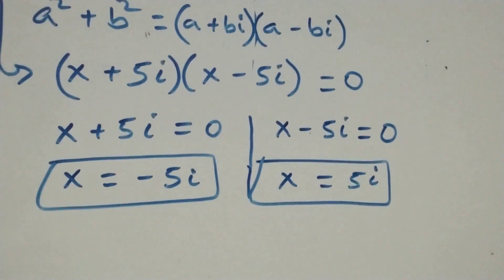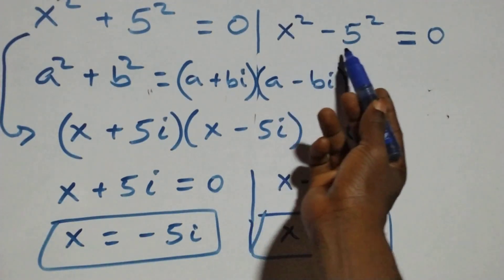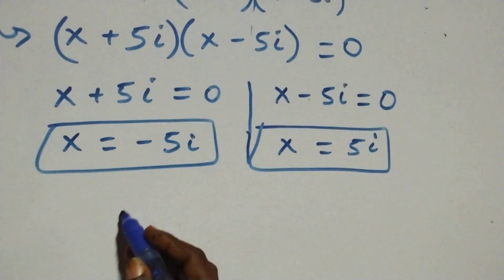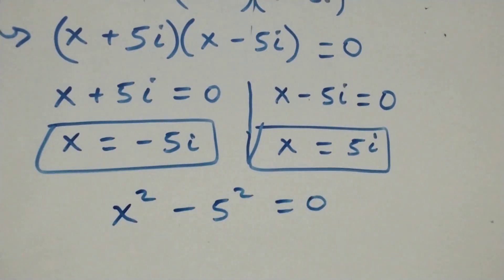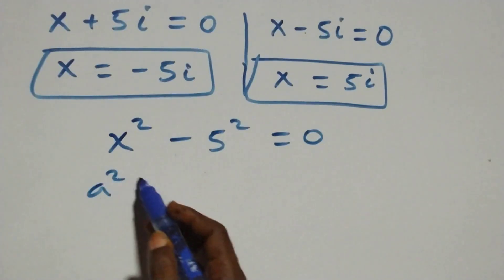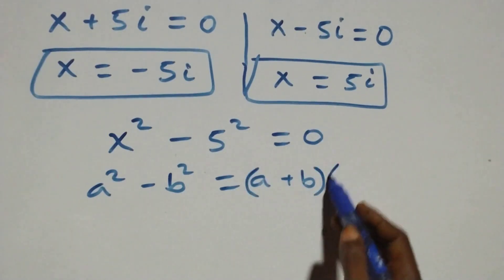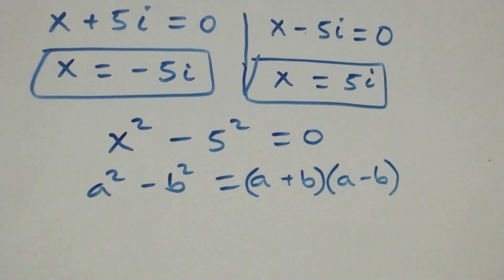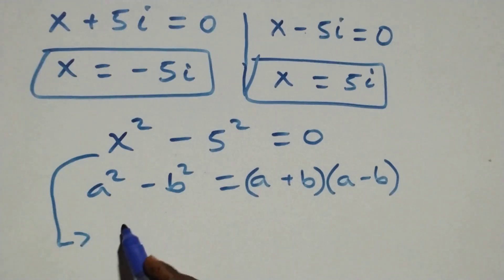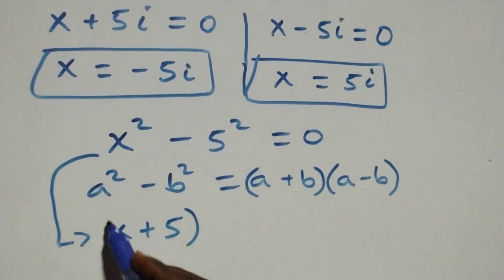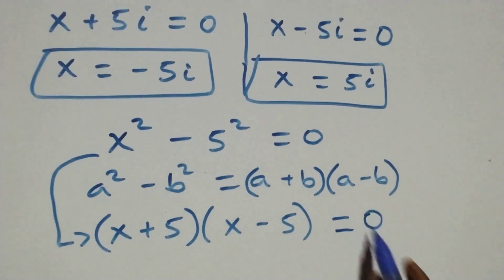Solving the second case, which is x squared minus 5 squared equals to 0. This also follows when we have a squared minus b squared, which is the same thing as (a plus b) times (a minus b). So it becomes (x plus 5) times (x minus 5) equals to 0.